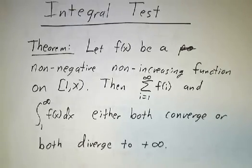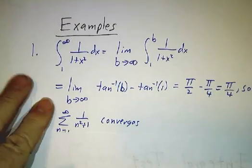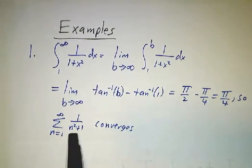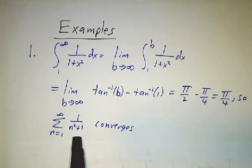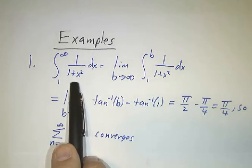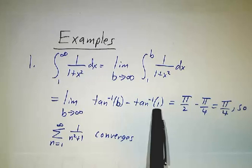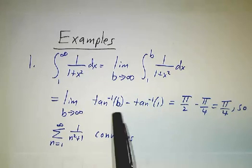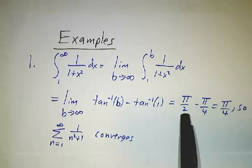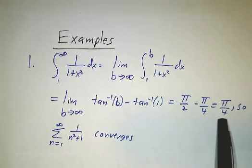Let's look at examples. The first is the sum of 1/(n² + 1), which gives 1/2 + 1/5 + 1/10 + 1/17 + 1/26 and so on. The terms are getting smaller, but are they getting small enough to converge? We look at the integral of 1/(1 + x²), which is arctangent. We get arctan(b) minus arctan(1), and as b goes to infinity, arctan(b) approaches π/2 while arctan(1) = π/4, so the integral converges — it gives the value π/4.